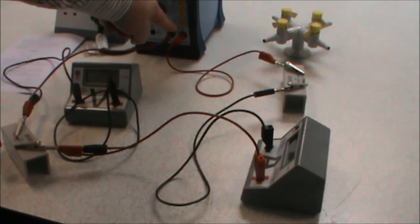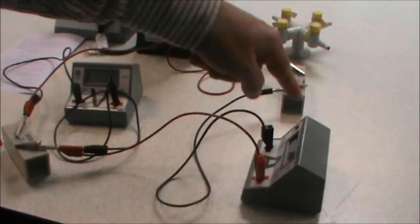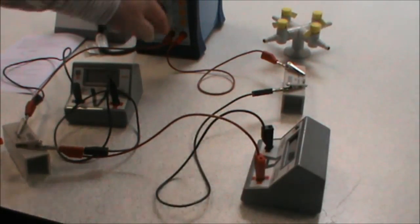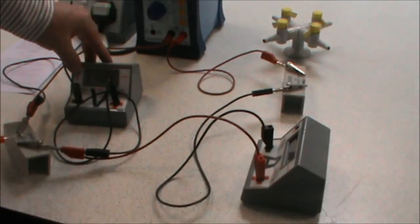And there we have our completed circuit. From our power supply through to the resistor, through our ammeter, through our LED, back to the power supply and the voltmeter in parallel.